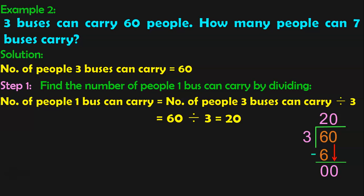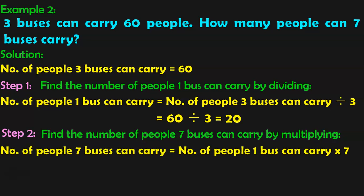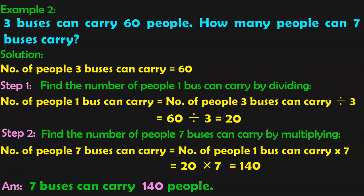The question is: how many people can 7 buses carry? So the next step is multiplication. Step 2: Find the number of people 7 buses can carry by multiplying. Number of people 7 buses can carry is equal to number of people 1 bus can carry multiplied by 7. That is 20 into 7, which is 140. So, 7 buses can carry 140 people.